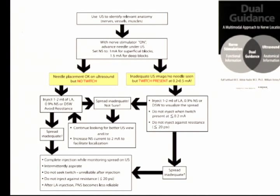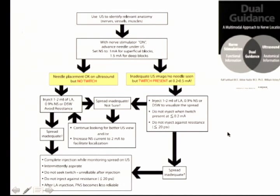If needle placement is not perfect on ultrasound and there is no twitch, injection of one to two milliliters of local anesthesia or glucose may be possible to avoid resistance. If adequate spread is achieved, we will have an appropriate block. This procedure sounds complex, but it is the concept of dual guidance. I made a videotape to demonstrate it.